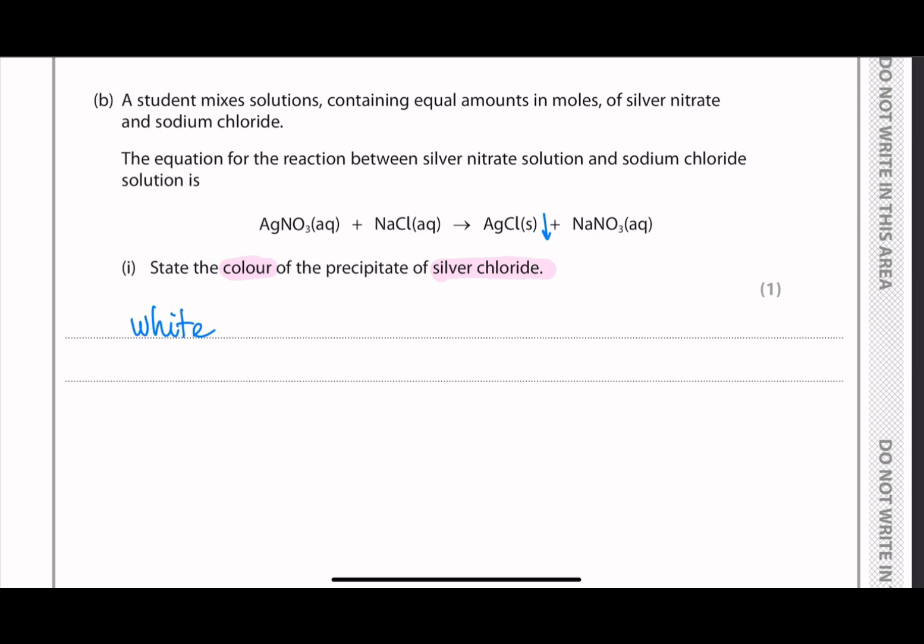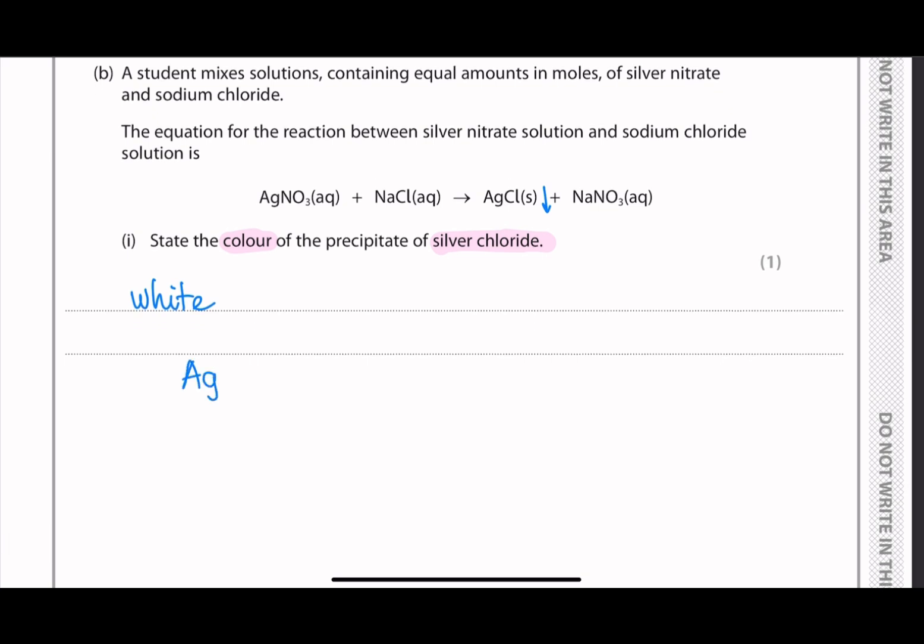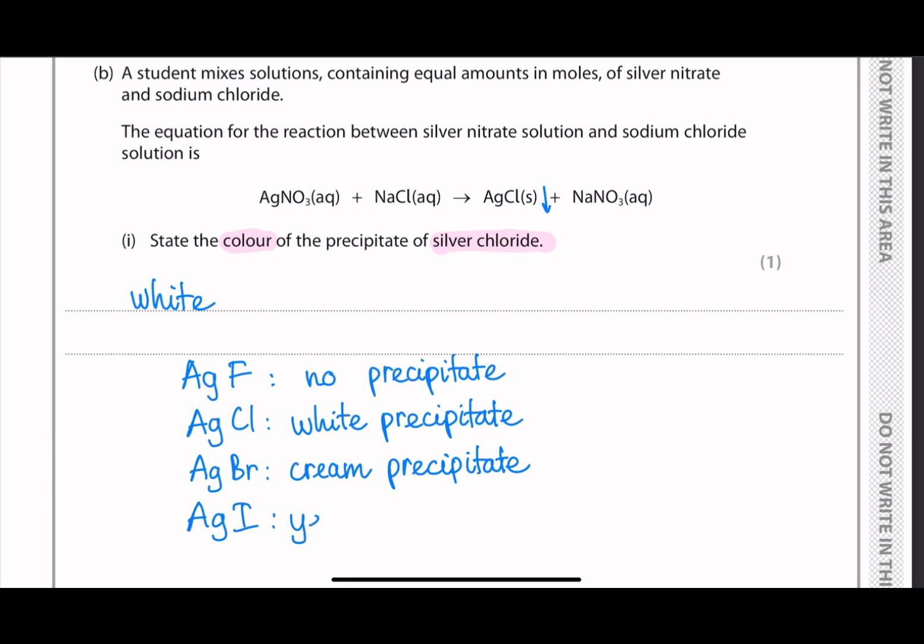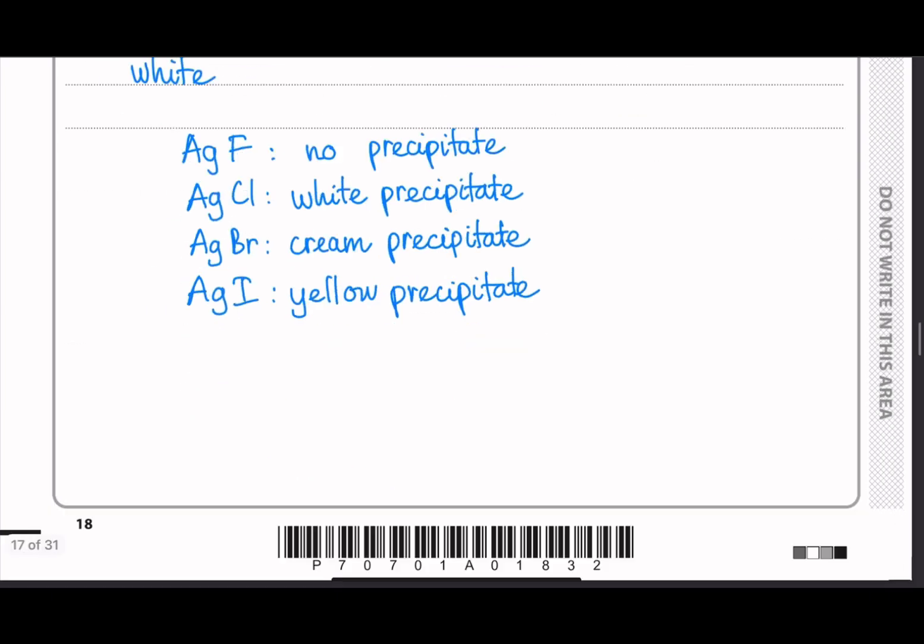So in the group 7 subtopic, we have the test for halogen ions, which is to combine that with silver ions. And each of the precipitate will have a different color. Silver chloride is the white precipitate. Silver bromide has cream precipitate. And silver iodide is the yellow precipitate. So there's a trend to this color.